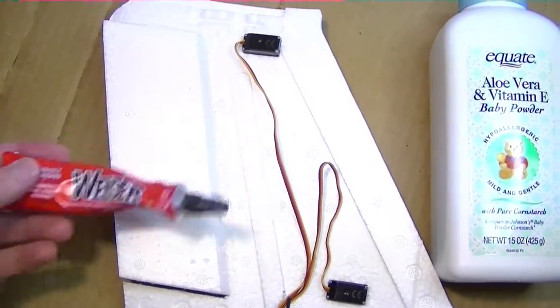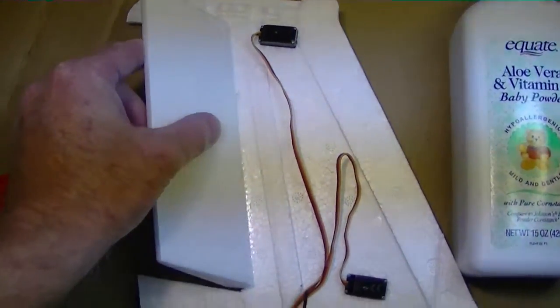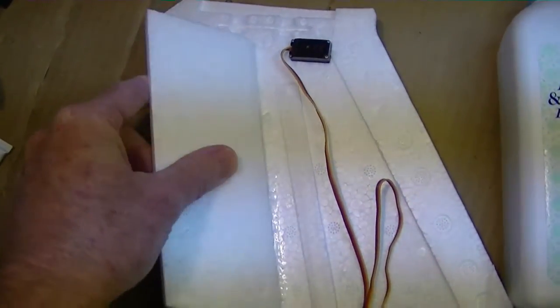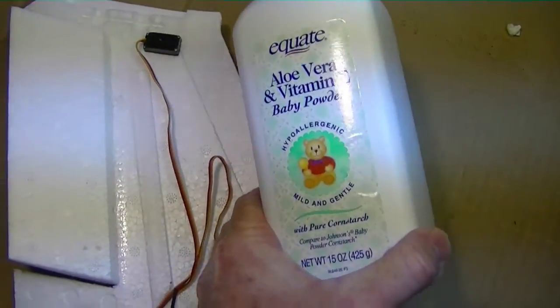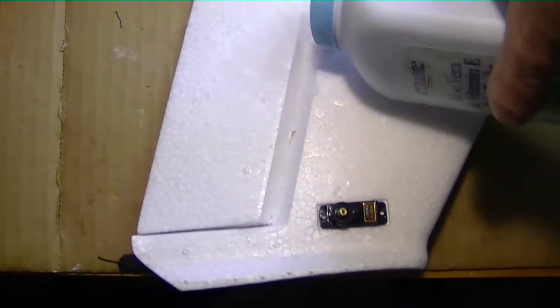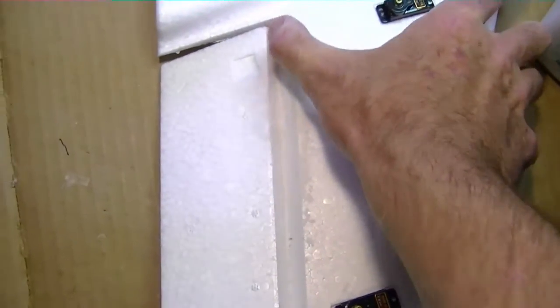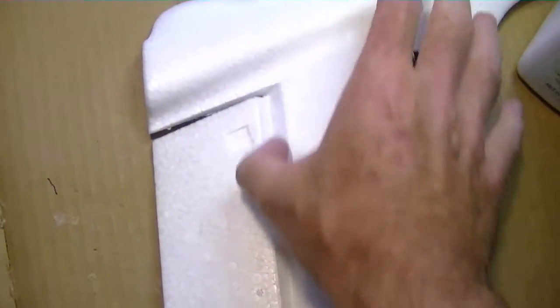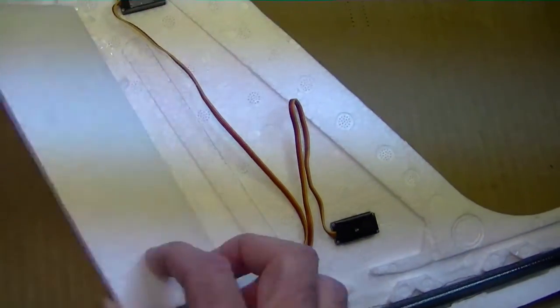Now after the welder's glue dries, the hinge line here may be kind of sticky still. You can probably hear that stickiness. The way we correct that is to just rub on a little baby powder. So I'll just sprinkle a little baby powder on here, lay it more or less flat, and then just rub it in to the crease. Do that both sides. And now I think you can see it's not sticky anymore. So that's that.